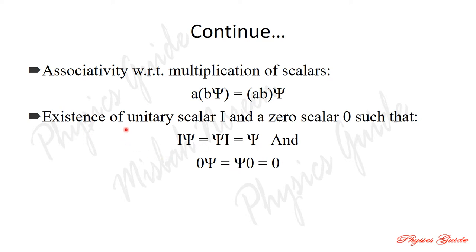The existence of a unitary scalar — identity I — and a zero scalar O. The identity I is such that if we multiply by one with any number we get that same number.